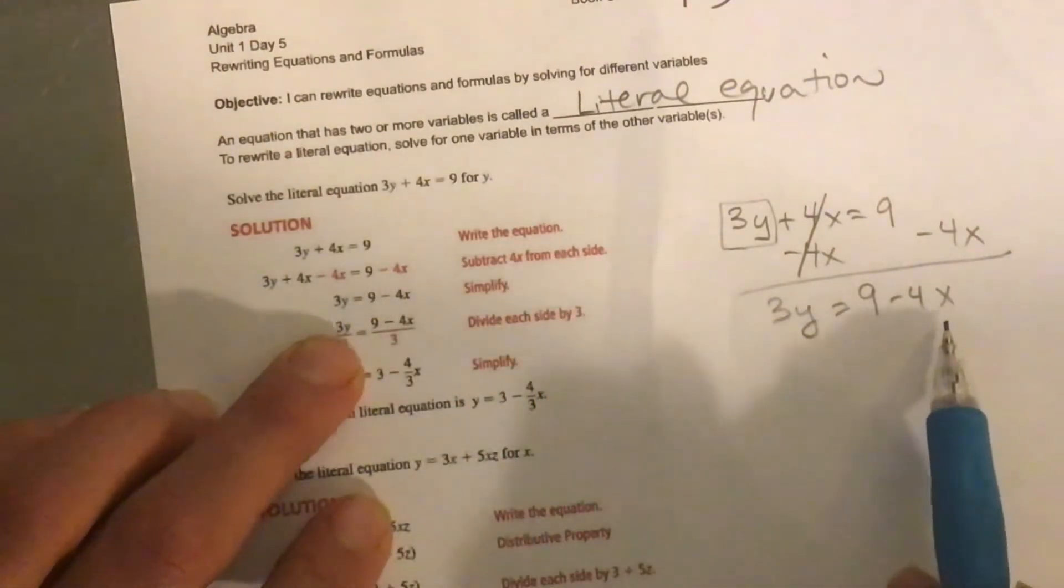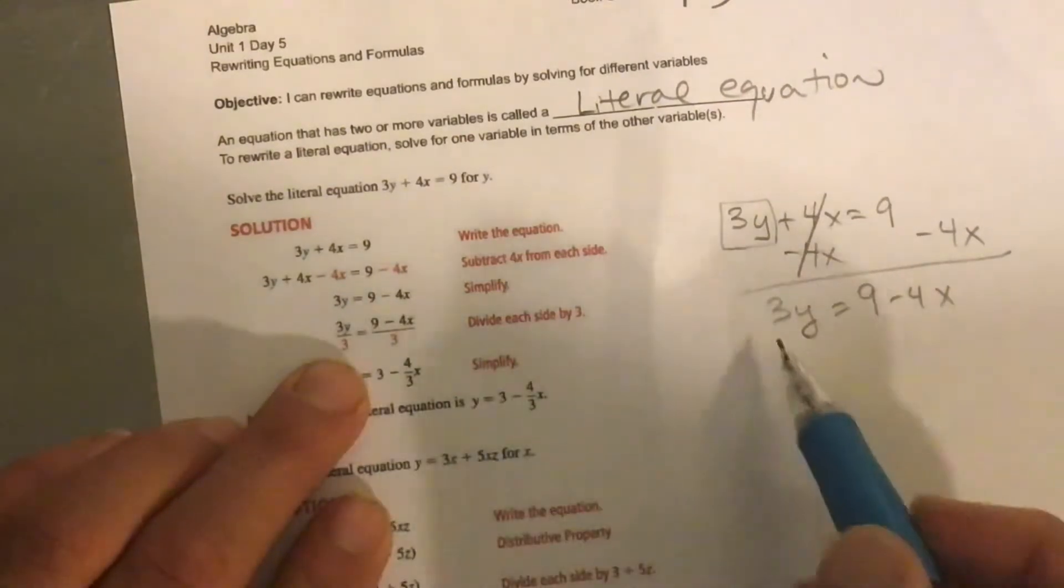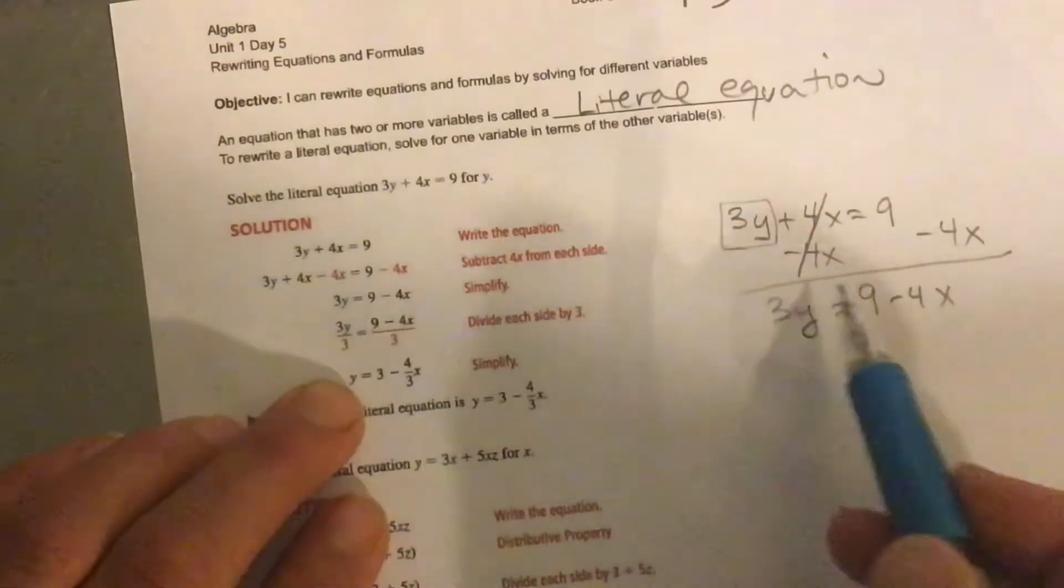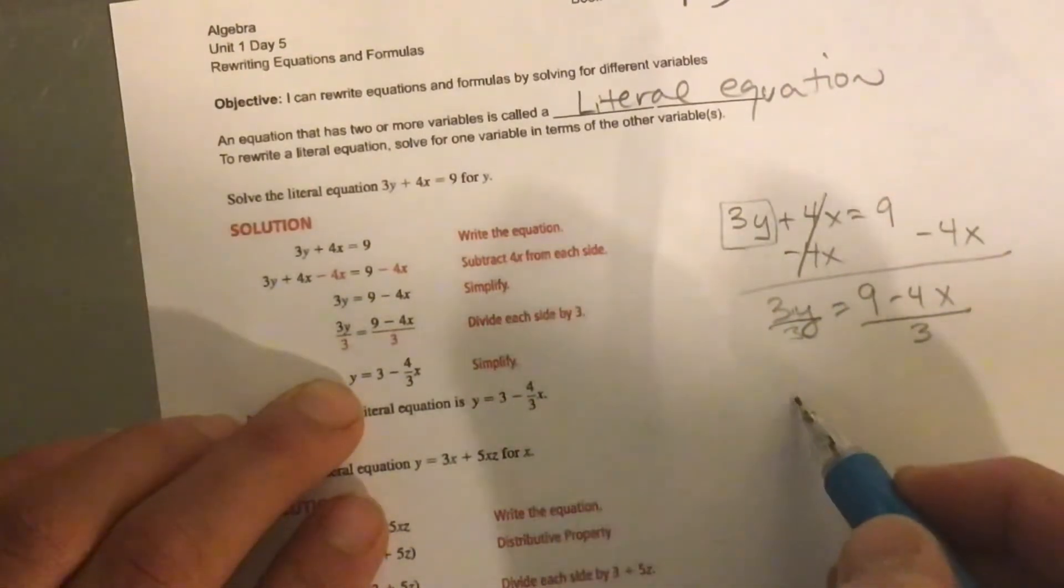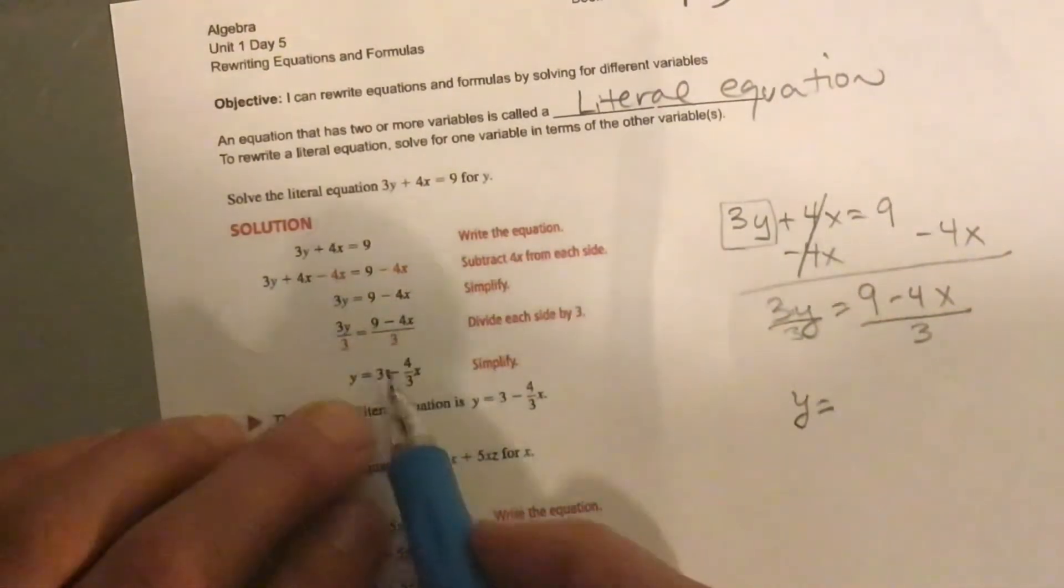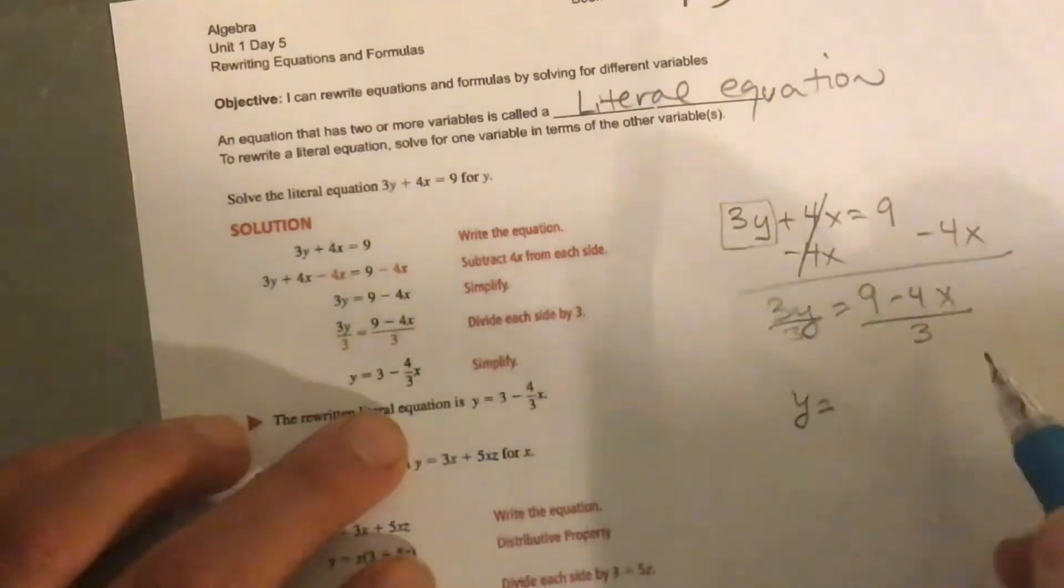Yep, and then they simplified it. Now right here, we're going to divide each side by 3, because that's multiplying. Divide by 3. Divide by 3. And y equals, and they simplify it. You've got to divide all of the terms by 3.